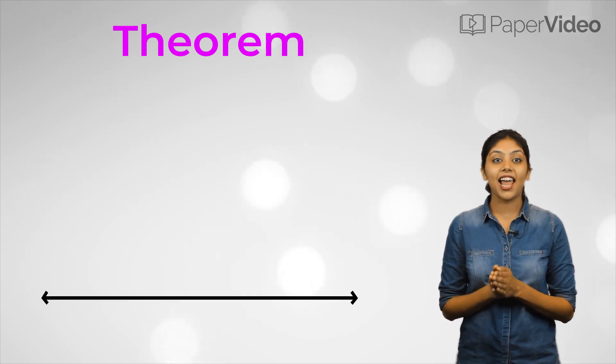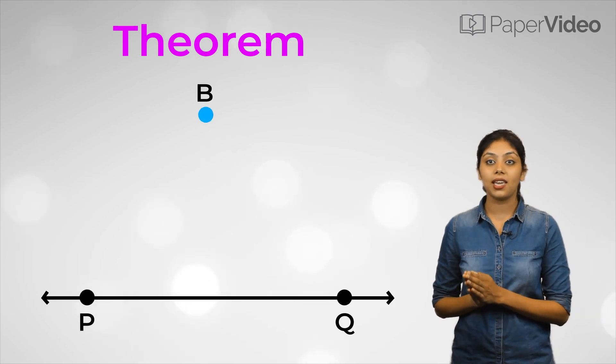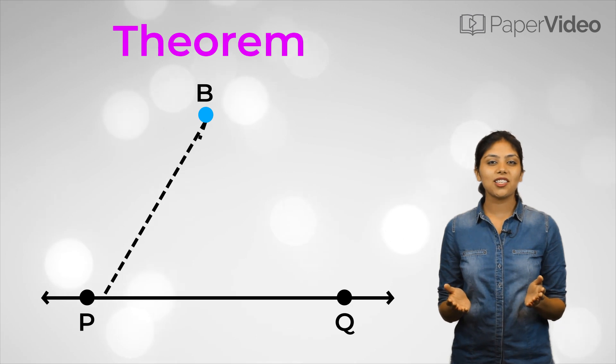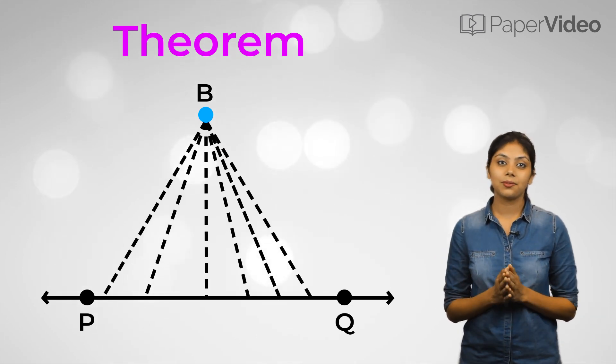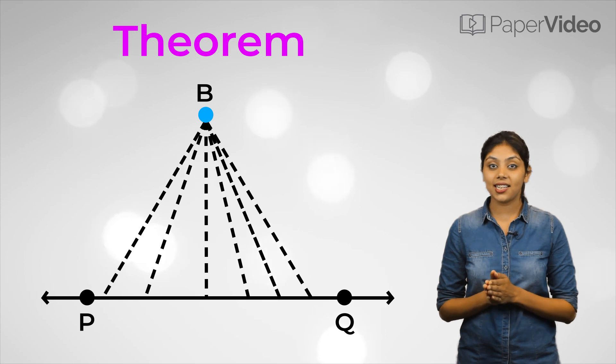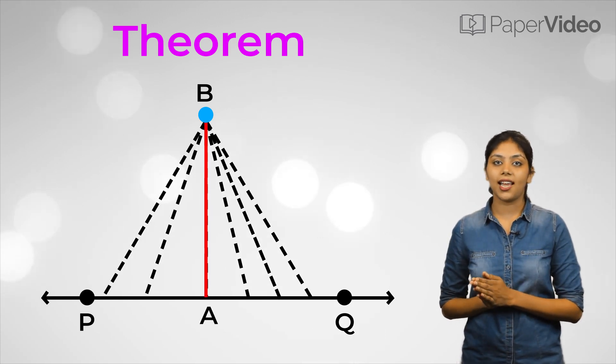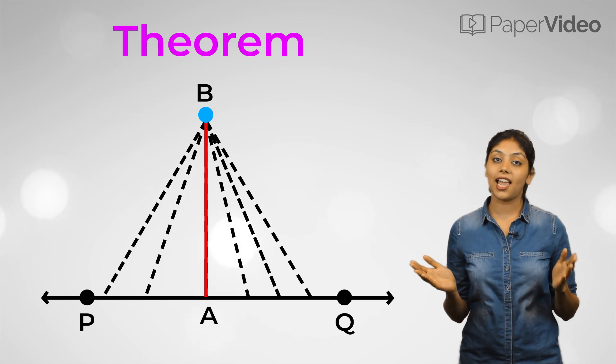Let us consider a line PQ and a point B away from the line like this. Now, let us draw some lines from point B to line PQ. If we look at the lines, we can clearly see that line BA is the shortest among all the lines drawn from point B to line PQ.